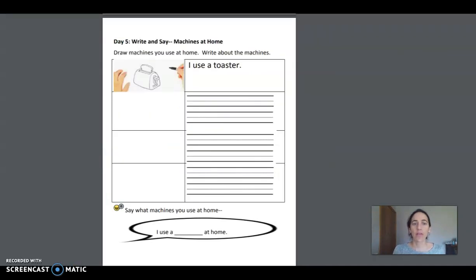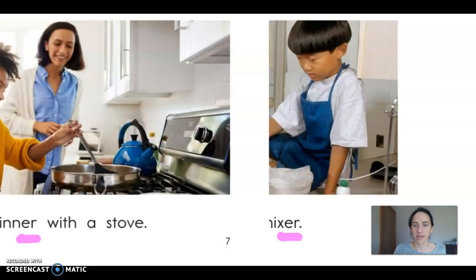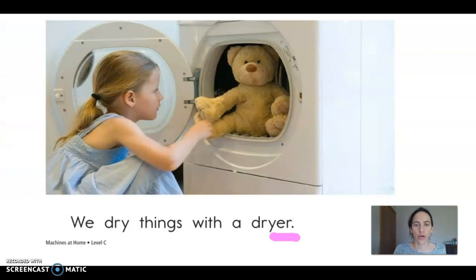Now, we're going to draw the machines you have at your home. And we're going to write about them. Look at this picture. That is a toaster. But we want to talk about it. So here I have the phrase, I use. I use a toaster. You can draw a picture of a different machine here. Remember, you can go back and use your book to find different machines and how to spell them. Look around your house.